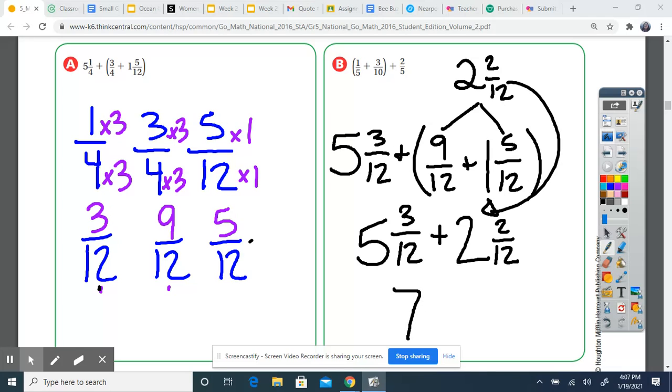Now I can add my fractions. They already have common denominators, so it's super simple. Three twelfths plus two twelfths—three plus two is five over 12. Five twelfths cannot be simplified, so seven and five twelfths would be my final answer.